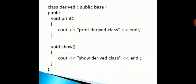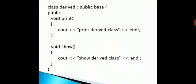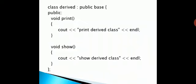Then there is another class 'Derived' which publicly inherits the base class. It also defines two functions: 'print', which prints 'print derived class', and 'show', which prints 'show derived class' — mirroring the base class functions but with derived class output.